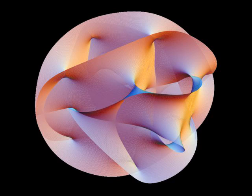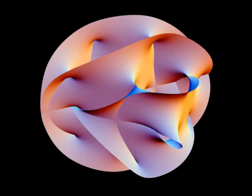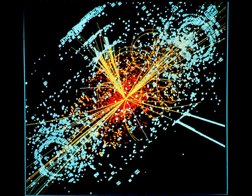The earliest string model, the bosonic string, incorporated only bosons, although this view developed to the superstring theory, which posits that a connection, a supersymmetry, exists between bosons and fermions.